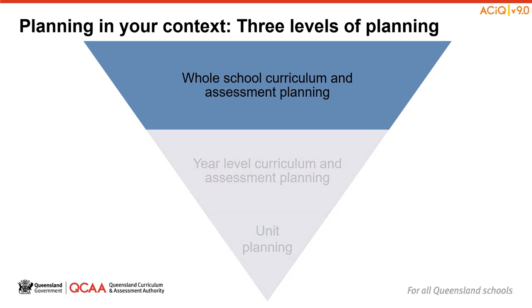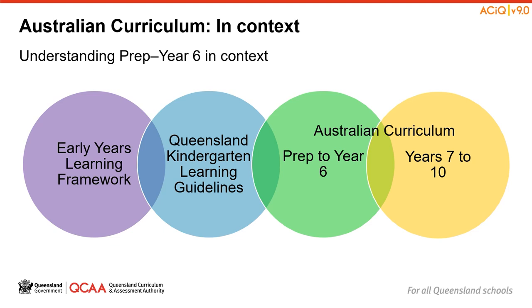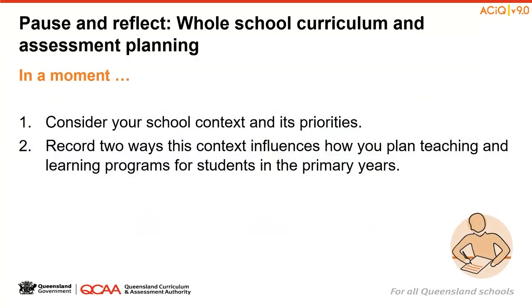Initially, consider what is happening at the whole school level and the implications this has for planning in your classroom. How do you need to account for your local context and its strategic priorities in your planning? We need to consider continuity of learning — knowledge, understanding and skills increase in depth and breadth across the years of schooling. For Queensland students who have participated in an approved kindergarten learning program, the Foundation or Prep to Year 6 Australian Curriculum Mathematics and English build on the Early Years Learning Framework and Queensland Kindergarten Learning Guideline.